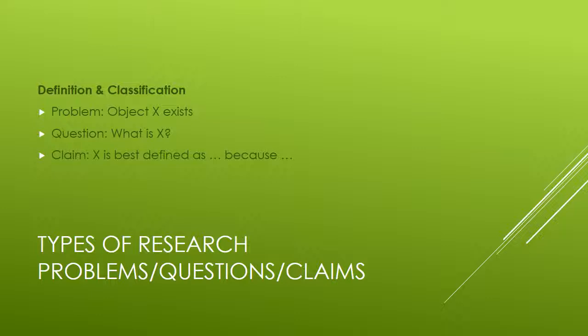The basic structure of definition and classification research projects: the problem is there's some object, phenomenon, or situation that exists, and the question is what is this? What are the things that make it up? How does it work? How do we understand this thing? The claim you would make is that this object or situation is best defined as blank because blank. For example, birds are best defined as descendants of dinosaurs because of their DNA and the genes they inherit. It's about how do we define something and why is that definition appropriate?